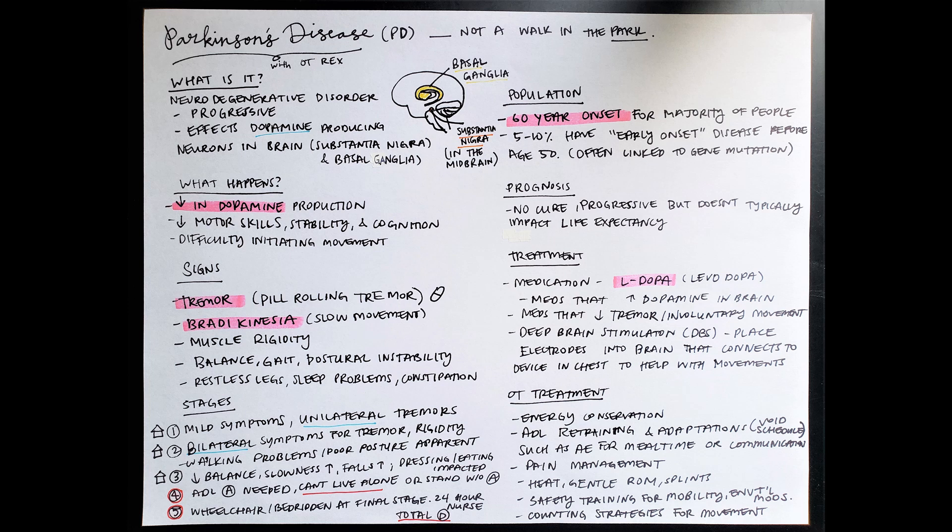Since our dopamine production decreases, it causes difficulty with motor skills, stability, cognition, as well as difficulty initiating movement, which makes sense because it's the parts of our brain that control movement.